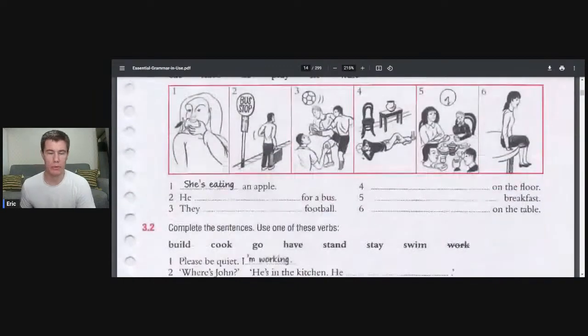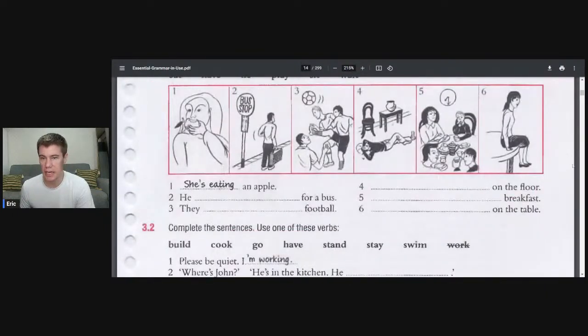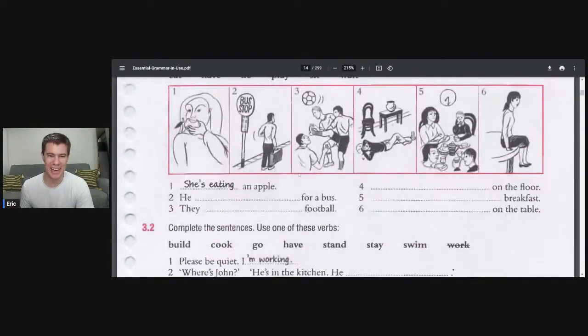Here we've got some examples. We're going to do these activities together. What are these people doing? She is eating an apple. Number two, he is waiting for a bus because it's singular, it's only one person. They are playing football. He is lying on the floor. They are eating breakfast. She is sitting on the table.